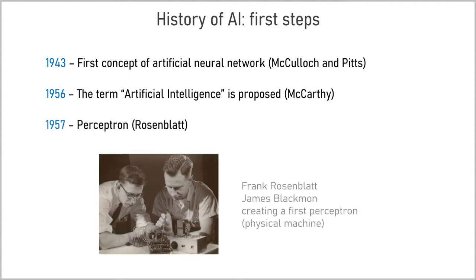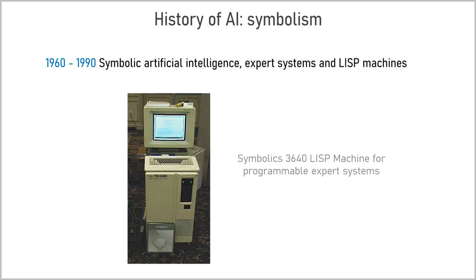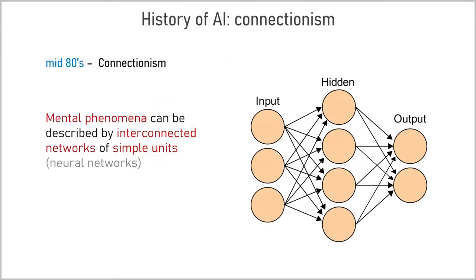In 1957, Rosenblatt and Blackmon created a physical machine representing an artificial neuron called the perceptron. Until the 90s, the dominant paradigm in AI was symbolic artificial intelligence, which gave rise to expert systems and LISP machines. These systems simulated the decision-making ability of a human expert based on high-level, symbolic, human-readable representations of problems. They were particularly popular before the end of LISP machines in 1987. From the mid-80s, parallel distributed processing became popular under the name of connectionism, and many fundamental AI algorithms were developed.